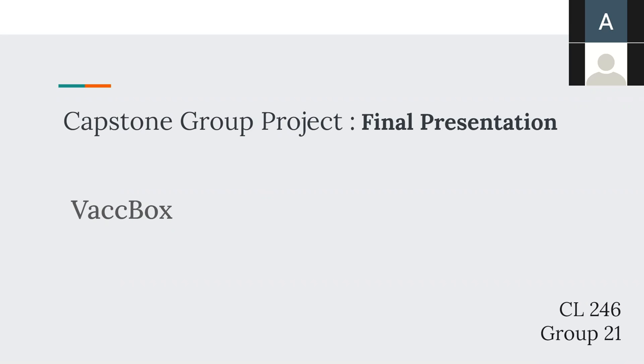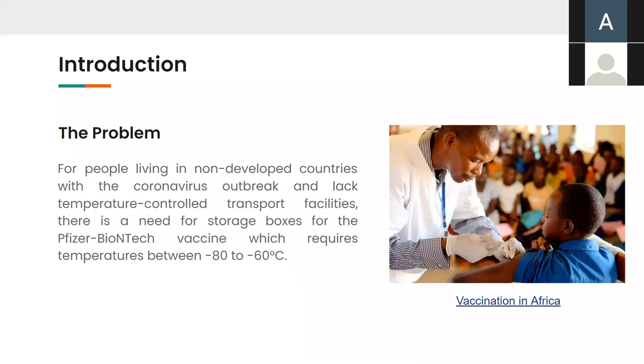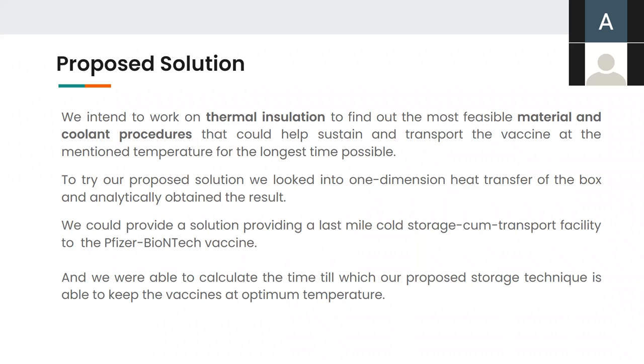Giving you a brief overview of our project, we try to solve the problem faced by people in underdeveloped countries, especially sub-Saharan Africa, where the lack of storage and transport technologies with temperature control facilities is becoming a barrier in using vaccines like Pfizer BioNTech vaccine that require a temperature profile to be maintained between minus 60 to minus 80 degrees Celsius. The solution we propose is to analyze various materials and procedures available and making a passive storage vaccine box using thermal insulation methods.